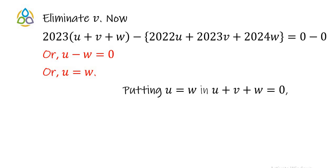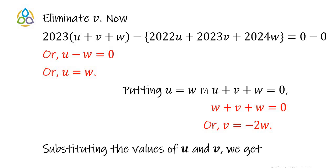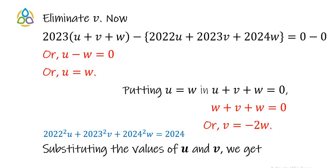Substituting u = w into u + v + w = 0 gives w + v + w = 0, so v = −2w. We now substitute the values of u and v in terms of w into the second equation: 2022²u + 2023²v + 2024²w = 2024.